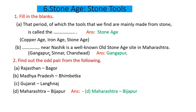The first question is fill in the blanks. A: That period of which the tools that we find are mainly made from stone is called the dash. Options given are copper age, iron age, and stone age. So the answer is stone age.